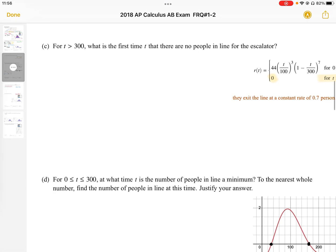Question number 1c says, for t greater than 300 seconds, what is the first time t that there are no people in line for the escalator?